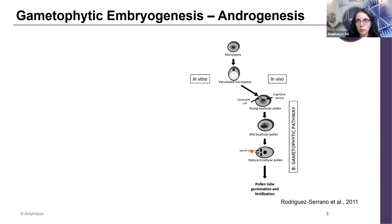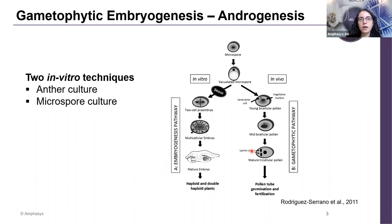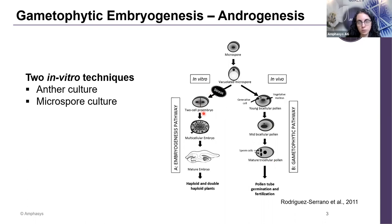This is what happens normally in vivo. However, in vitro, during anther and microspore culture, if a stress is applied at a very specific time point in cell development, this pathway can change its course and be geared towards the development of embryos. One hint that this is going to happen is that instead of having an asymmetrical cell division, a symmetrical cell division will occur, and this leads to the formation of a two-cell proembryo.